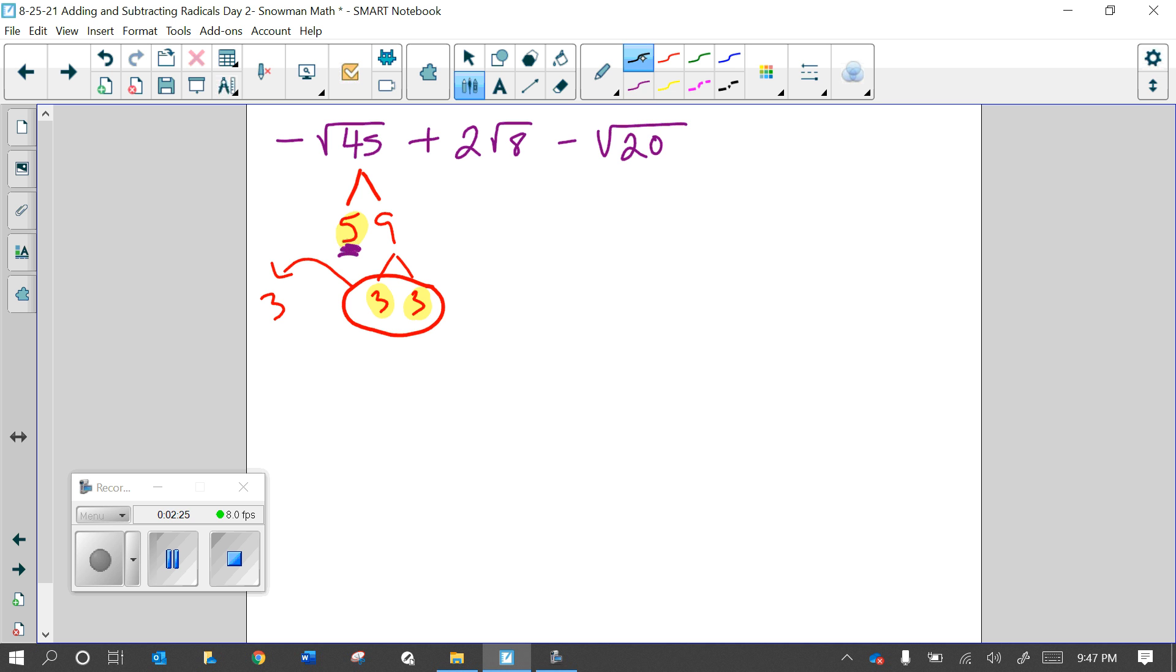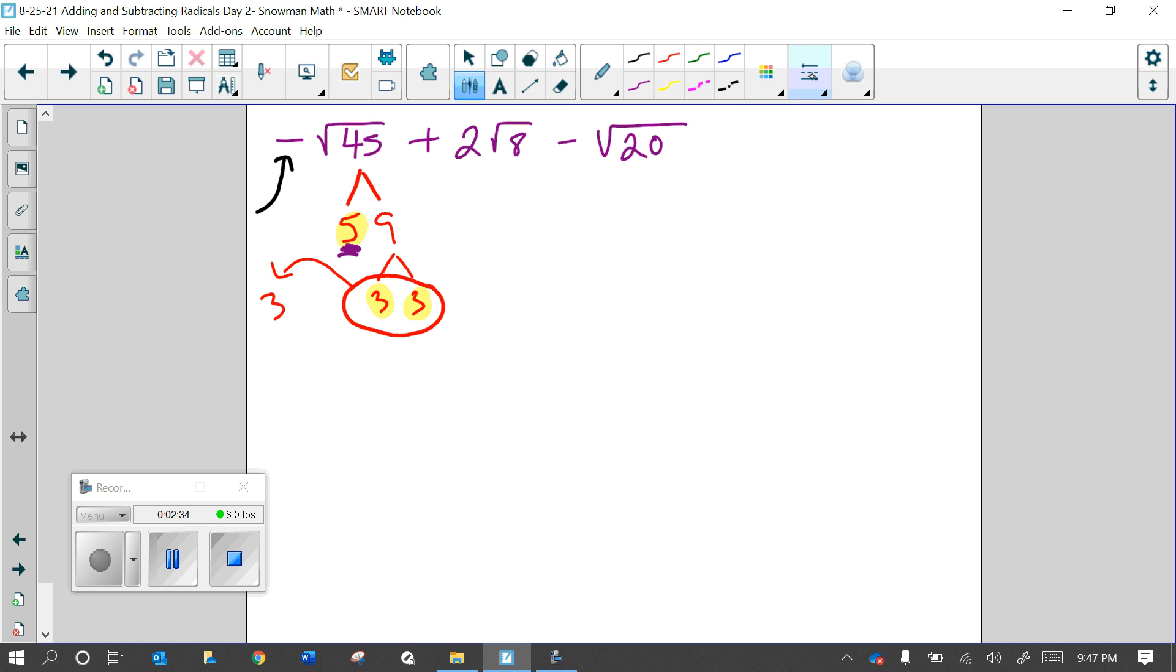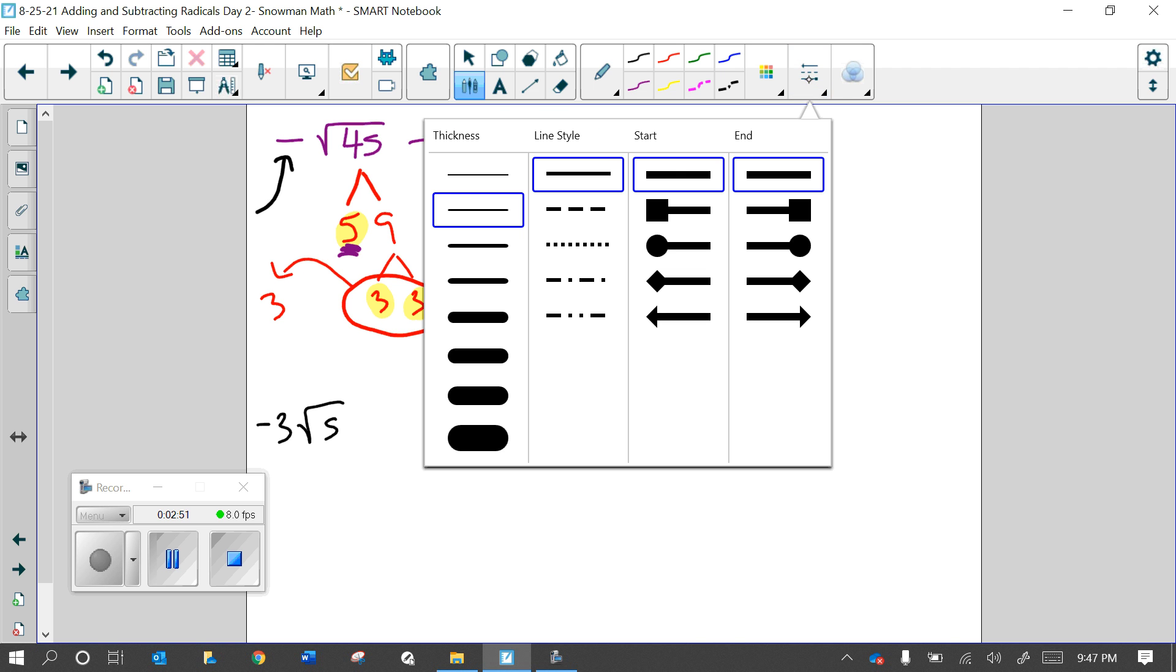Okay, so to put that together, we have this negative sign. Don't forget about that. Negative, and then the 3 came outside. And then the 5 stays on the inside. Okay, and then the next part, it says plus 2 square root of 8. Okay.